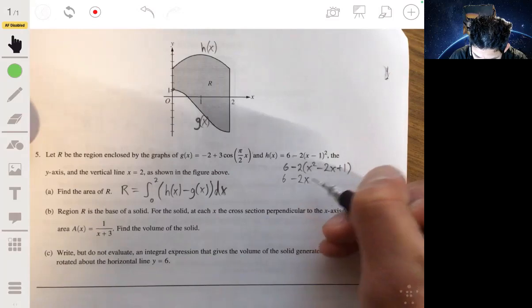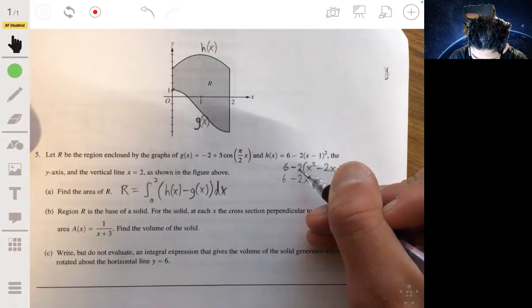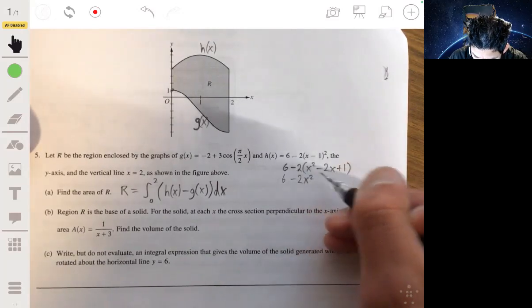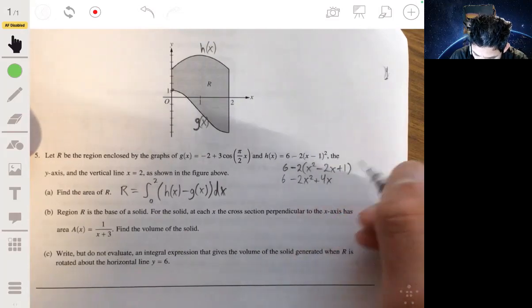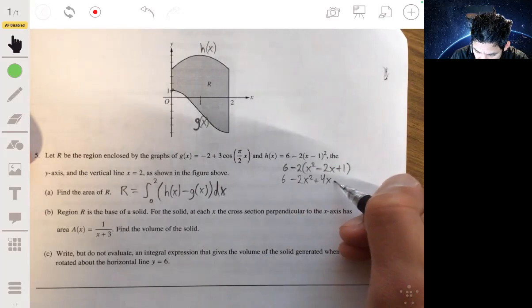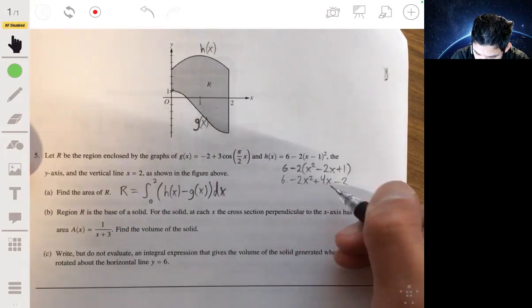6 minus 2x² plus 4x, and then this will be minus 2, and those 6 and that minus 2 will cancel.